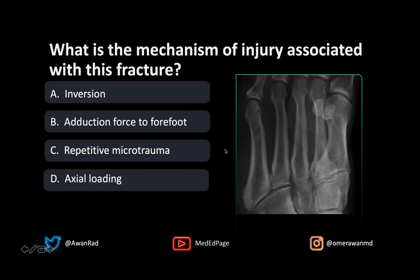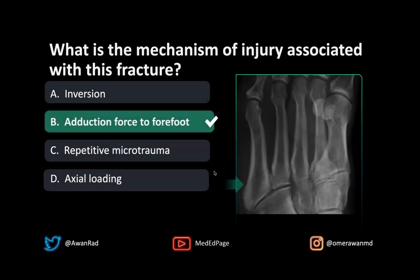So what is the mechanism of injury here? Is this an inversion injury, adduction force to the forefoot, repetitive microtrauma, or axial loading? This is actually one of three main fractures we see in the metatarsals. This would be a Jones fracture at the metadiaphyseal junction. The Jones fracture is a result of adduction force to the forefoot when the ankle is in plantar flexion. So B would be the right answer here.